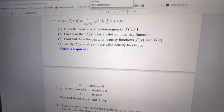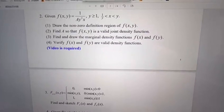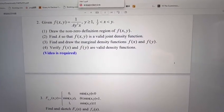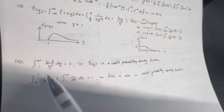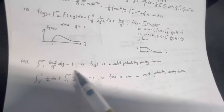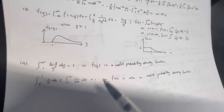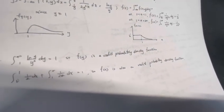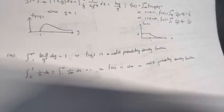In question number 4, it asks us to verify that fx and fy are valid density functions, so their integrals should equal 1. By calculating the integral of fy, it equals 1. By calculating the integral of fx, it also equals 1. So both fx and fy are valid probability density functions. Thanks for watching.